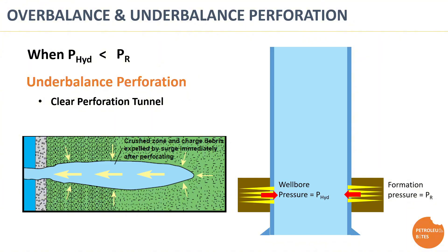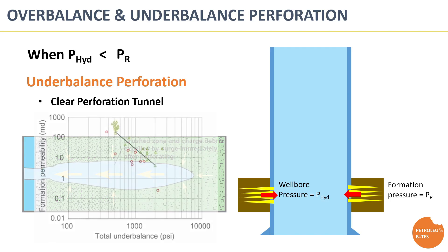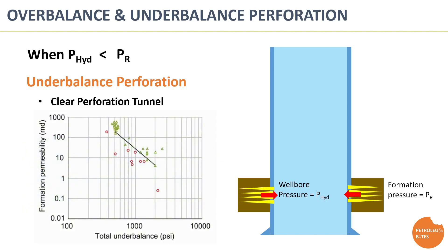There are many correlations and best practices to identify the optimum underbalance value based on rock permeability. For example, a chart by George King suggests creating an underbalance value between 600 and up to 1,500 psi, which should yield good results in an oil-bearing formation with permeability ranging from 5 to 100 millidarcy.